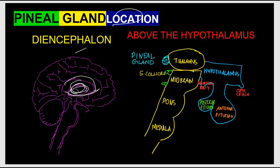The diencephalon includes the thalamus — there are right and left thalami — the hypothalamus anteriorly, the subthalamus near the midbrain, and the epithalamus on the posterior side. The pineal gland is part of the epithalamus, located superior to the superior colliculi of the midbrain and posterior to the thalamus. It sits in the posterior and central region of the brain, between the two cerebral hemispheres.